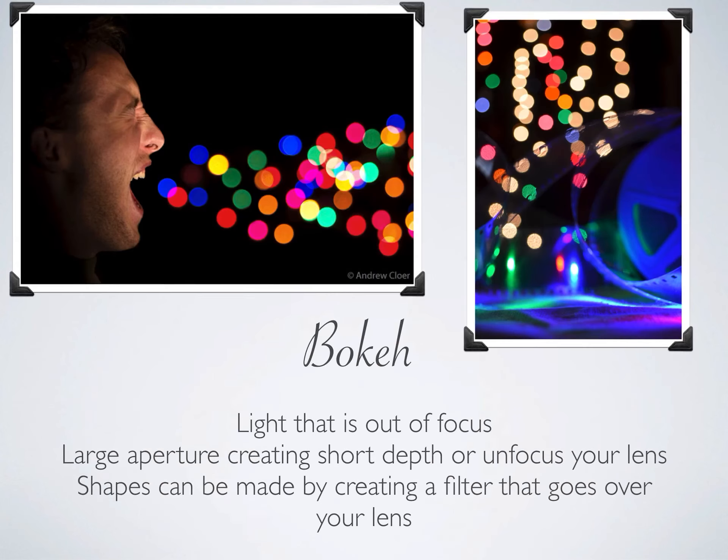Bokeh. We've talked about bokeh. Bokeh is a lot of fun. It is light that is out of focus — light that's in the background, usually small specks of light. Christmas lights work fantastic for it. You can also do natural bokeh. If you have light reflecting off the water making little dots of light in the background, and you get those to be out of focus by either having a short depth of field or actually unfocusing your lens, you can create what's called bokeh light. And if you want to get real creative, you can actually make a filter for your camera that turns these bokeh lights into shapes. I'll put a link in Schoology if you're interested to see how that works.